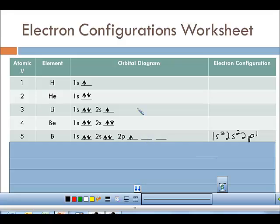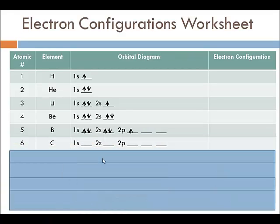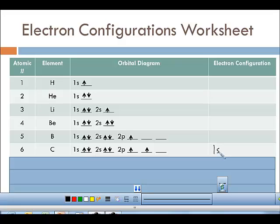For carbon, we add one more electron. Now we are showing Hund's rule — each line represents an orbital in the 2p sublevel, and we fill empty orbitals first before pairing. So carbon's sixth electron goes into the second 2p orbital rather than pairing with the first. The electron configuration is 1s² 2s² 2p².